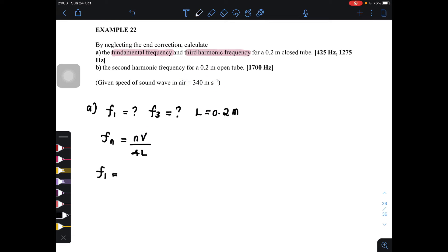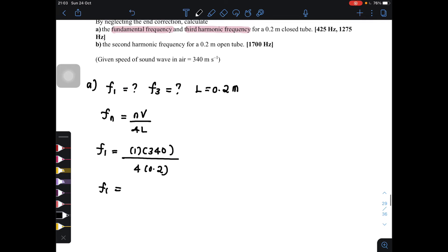So you can substitute F1 equals 1 times 340 divided by 4L. And then you will get F1 is equal to 425 Hz. And then,